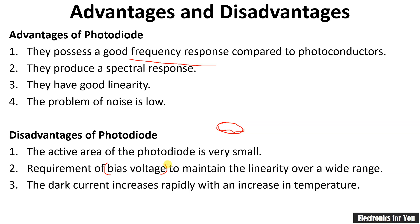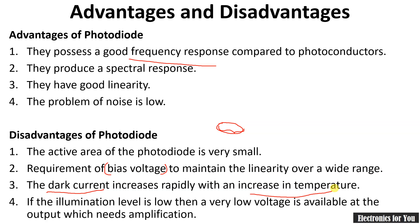Another disadvantage is the problem of dark current — the current that exists in the dark, meaning that even in the absence of light some current flows, and this dark current increases rapidly with temperature. Lastly, when the illumination level is low, a very low voltage is available at the output, which requires amplification. Overall output is very low and therefore amplification is necessary.